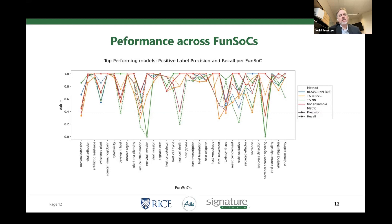There is variable performance across each of the functional categories that Gene described. If you end up using the software and you care about a specific functional category, you might want to note the performance in that category. For example, bacterial counter-signaling shows that without the ensemble approach, performance would be really poor. Some categories, such as induced inflammation, just globally don't do as well. This all comes down to the amount and quality of training data we have in each of the functional categories — that's probably the quickest way to describe the variable performance.